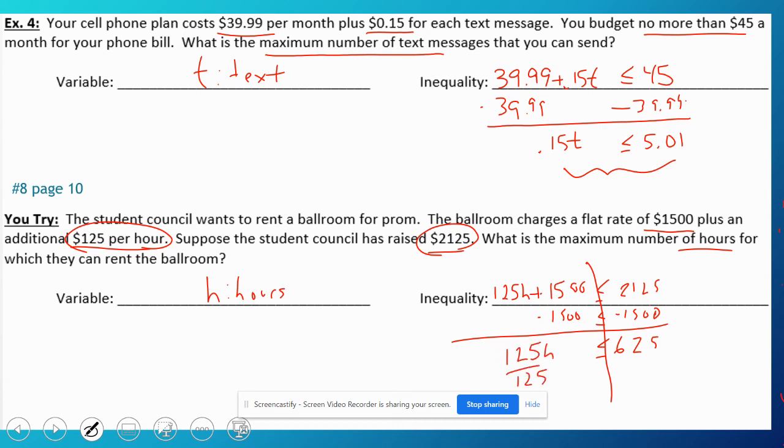$625, bring down the $125, and then divide. And that goes in five times. So as long as we rent it for five hours or less, we have enough money.